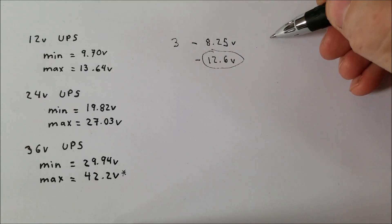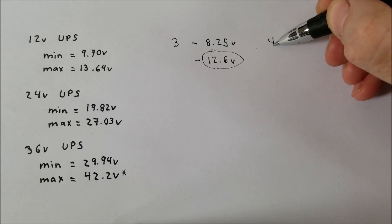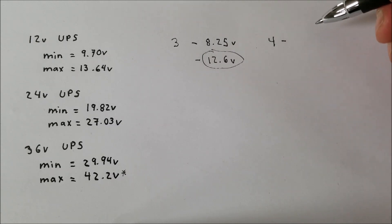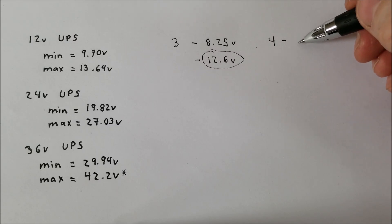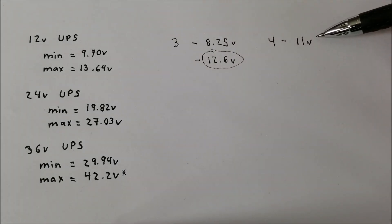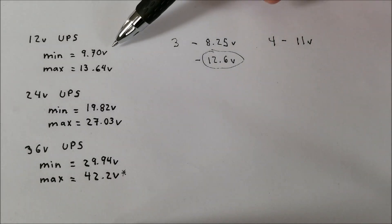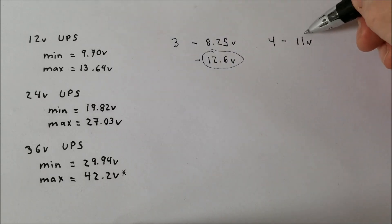Now let's see if we do 4 cells in series. So we do 4 cells in series and we multiply that by 2.75V for the minimum. We obtain 11V. And as you can see here, now this becomes the problem because the minimum voltage is 11V whereas the UPS goes down to 9.70V. So again here, we have a problem. This will not work.